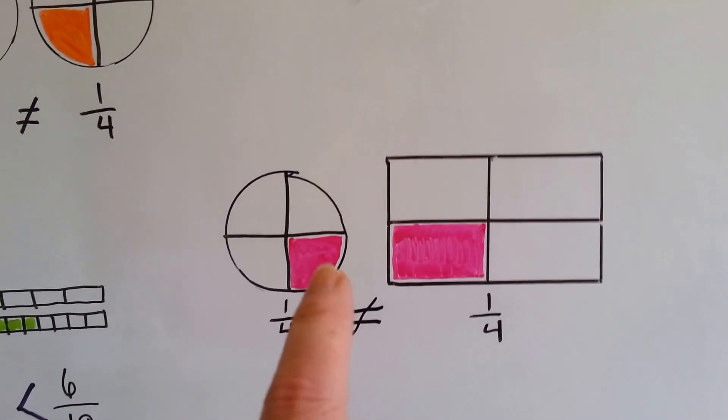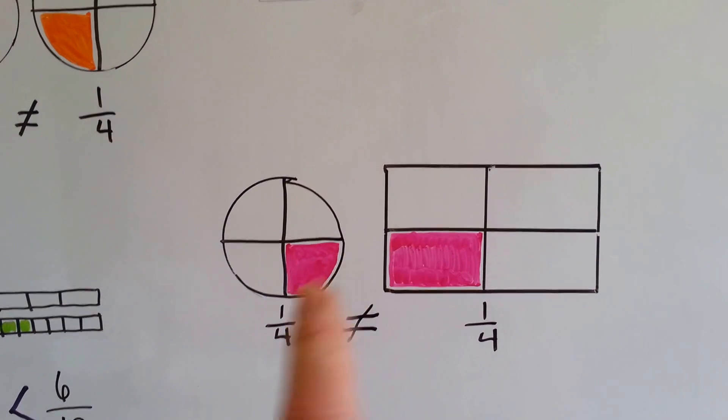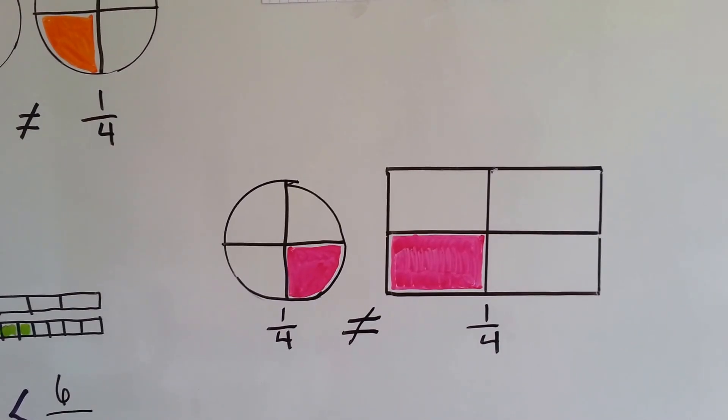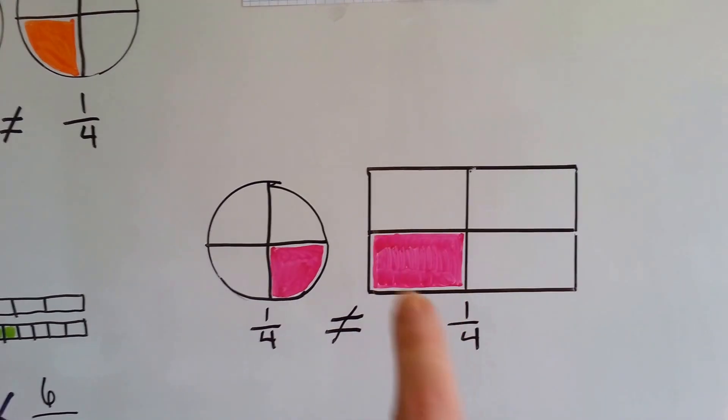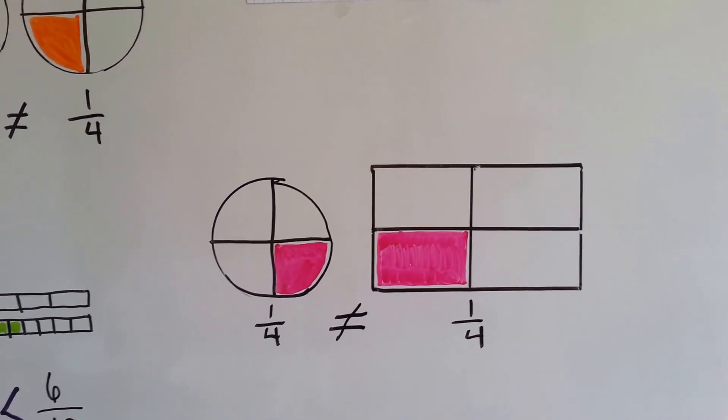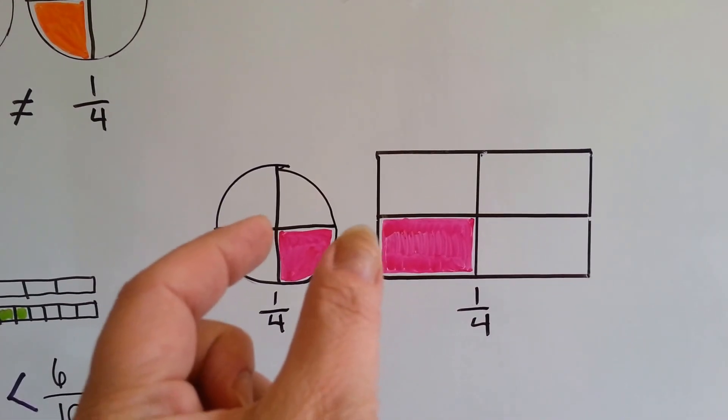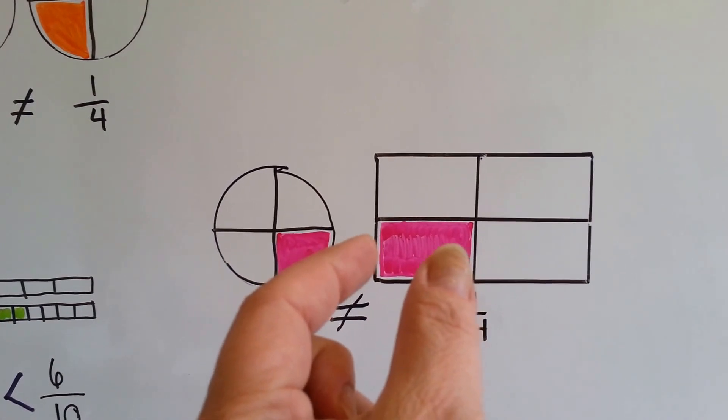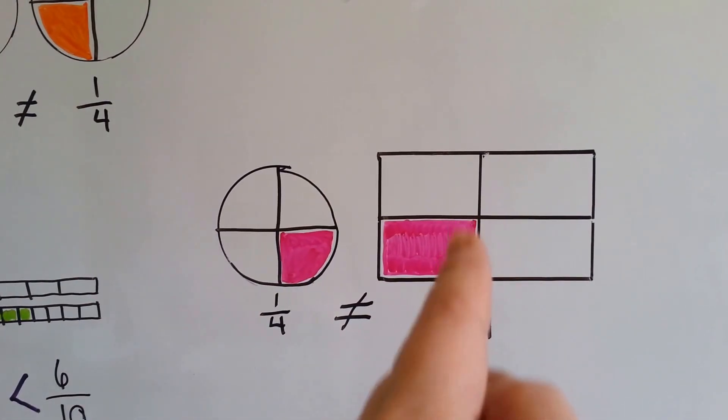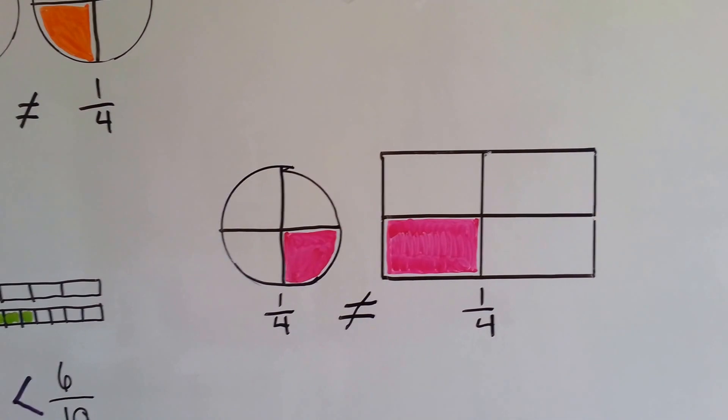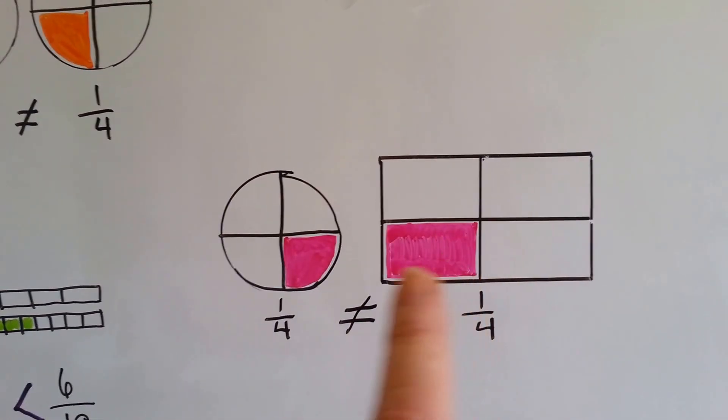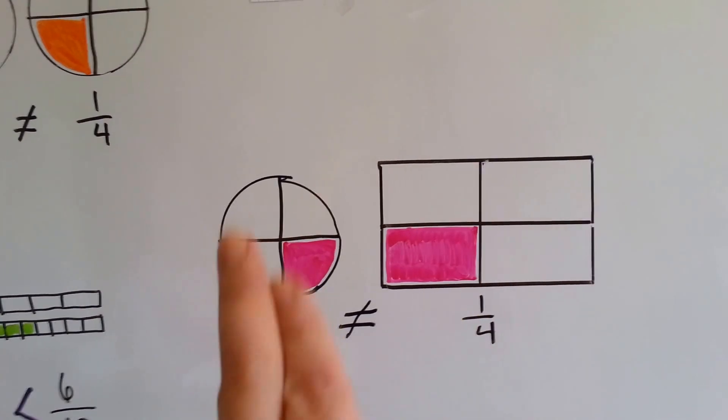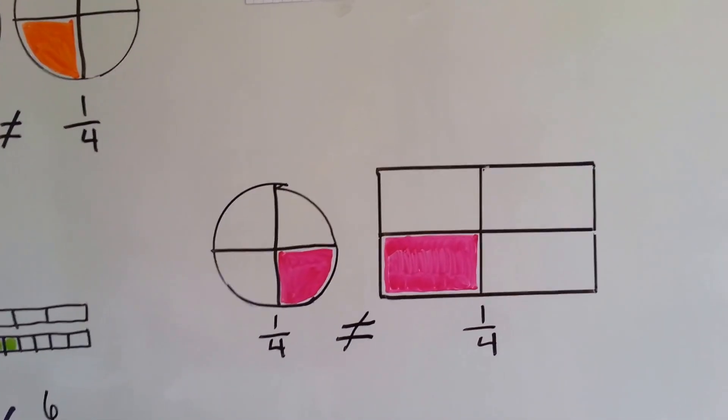Now, just because something is a fourth doesn't mean that it's the same as another fourth. A fourth of this circle is not equal to a fourth of this big rectangle. Look at how little this piece is. If you put it here, there's so much more that this one has. So just because they're both a fourth doesn't mean they're equal. They have to be a fourth of the same thing. They both have to be circles, or they both have to be rectangles.